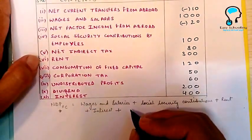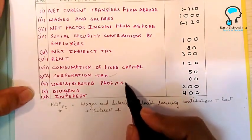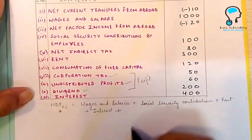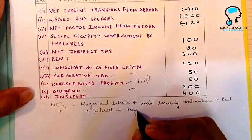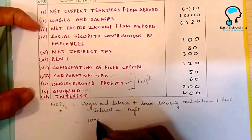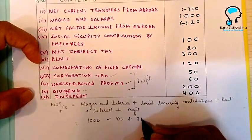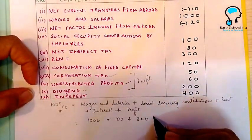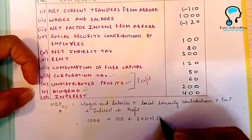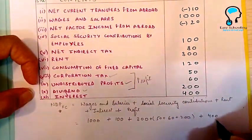Corporation tax, undistributed profit, and dividends together are the components of profit, so we add all three. Wages and salaries = 1000, social security contributions = 100, rent = 300, profit = 50 + 60 + 200, and interest = 400.